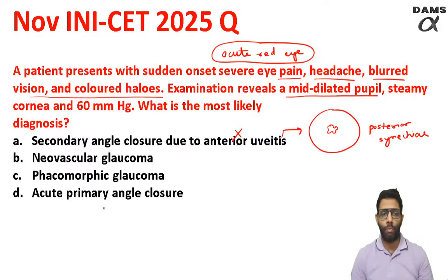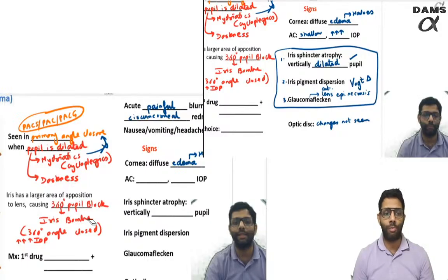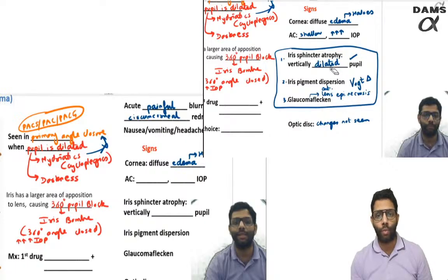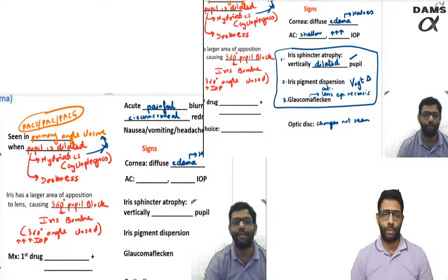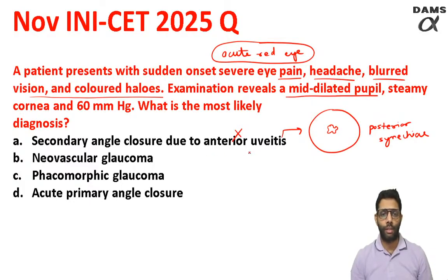The answer to this question is acute primary angle closure. Everything can be the same in secondary angle closure due to uveitis, except the pupil. In acute primary angle closure, the eyeball is very small, usually occurring in hypermetropia patients with small eyes and a small anterior chamber. When the pupil dilates due to mydriatics or darkness, there is a pupil block mechanism with iris bombé — same as uveitis. But the clinching point is the vertically dilated pupil, which differentiates acute primary angle closure from acute uveitis.